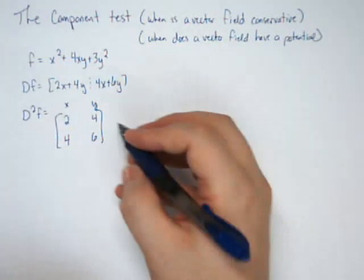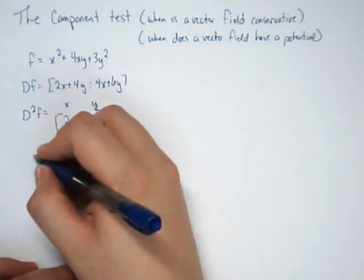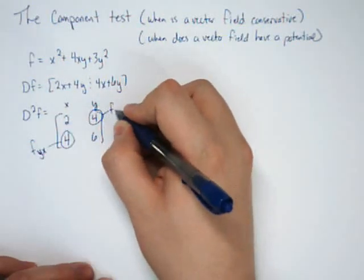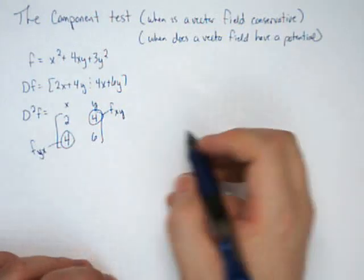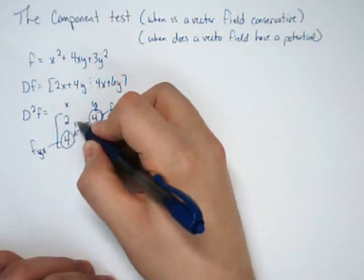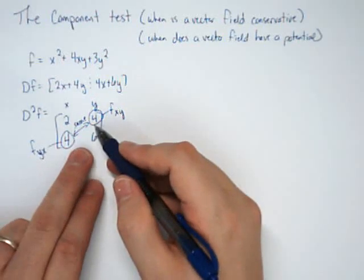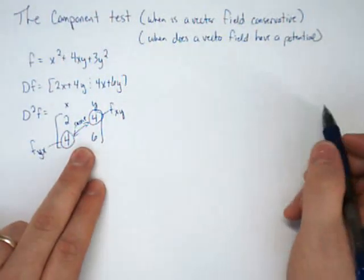Now something I'd like to point out, this number right here is f sub yx, and this number is f sub xy. And those always should be the same. We're going to be using that fact to determine when something has a potential.